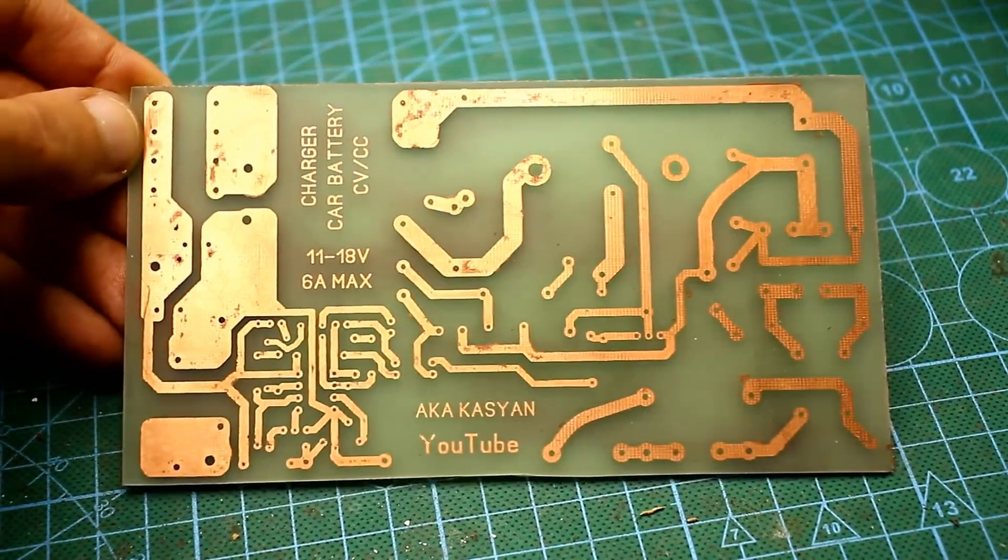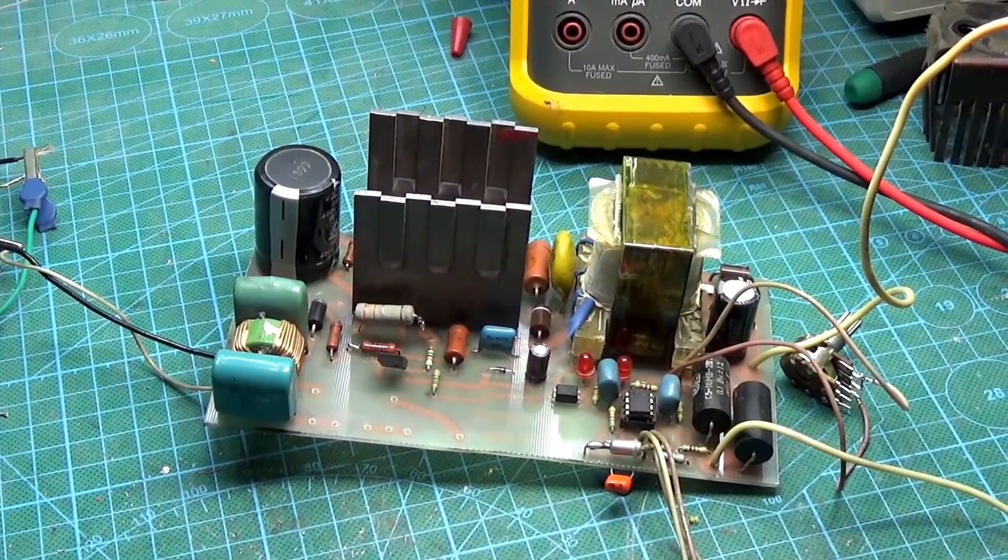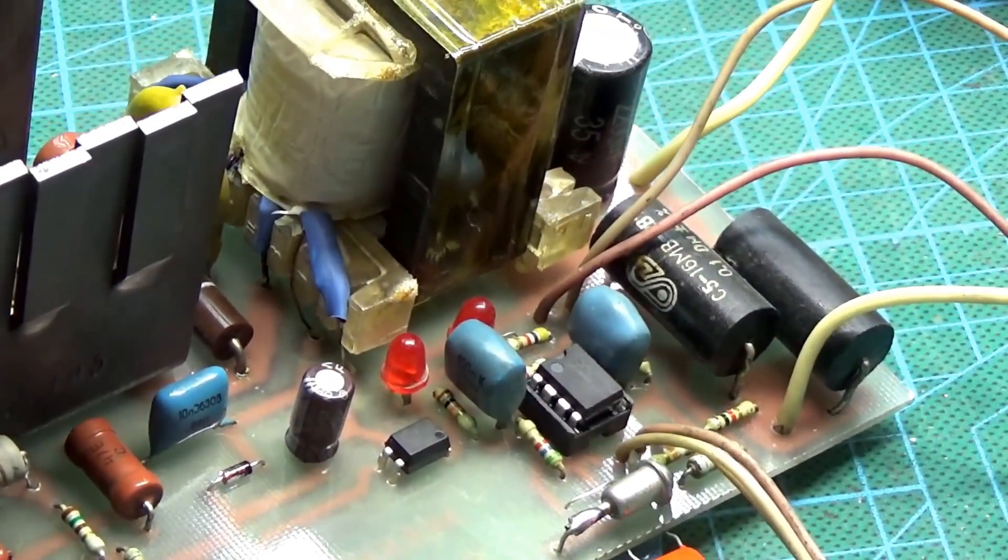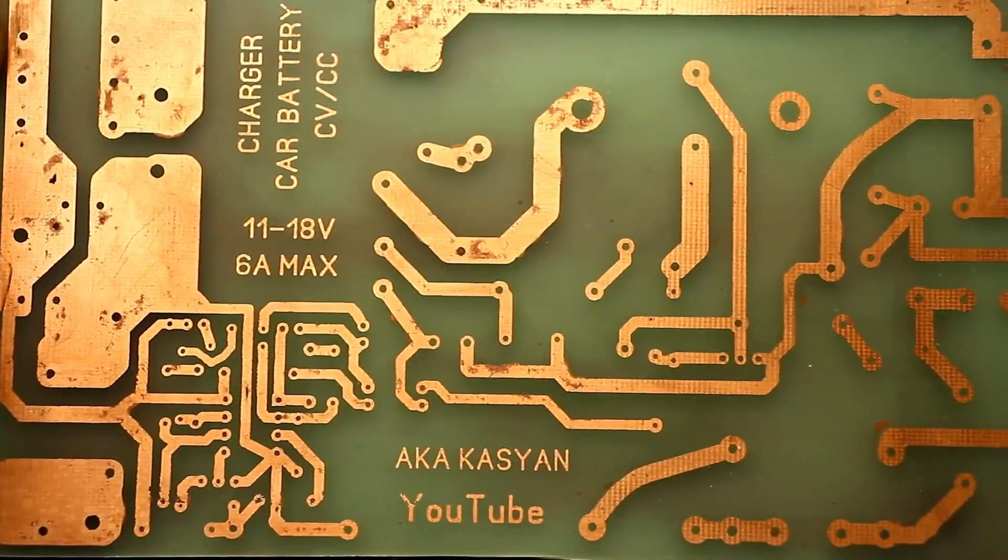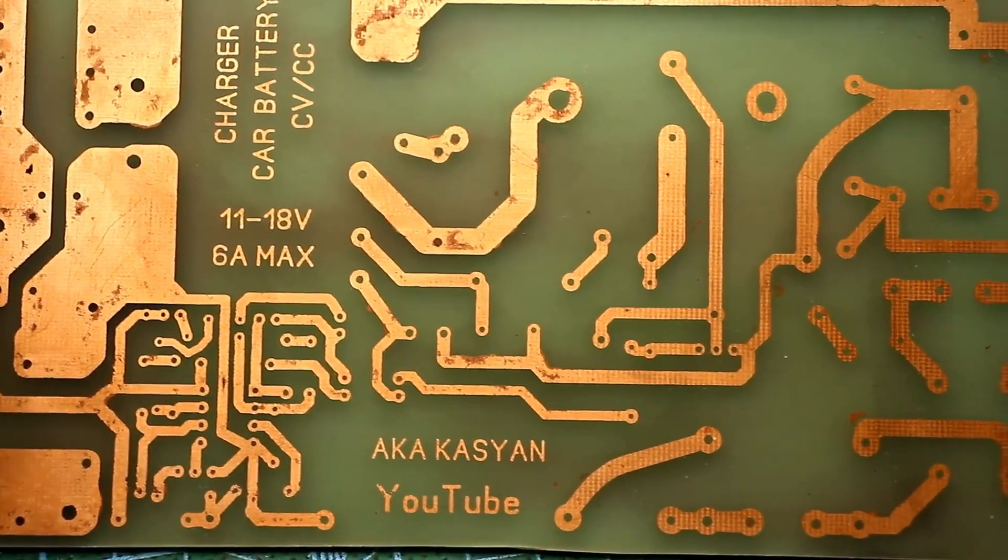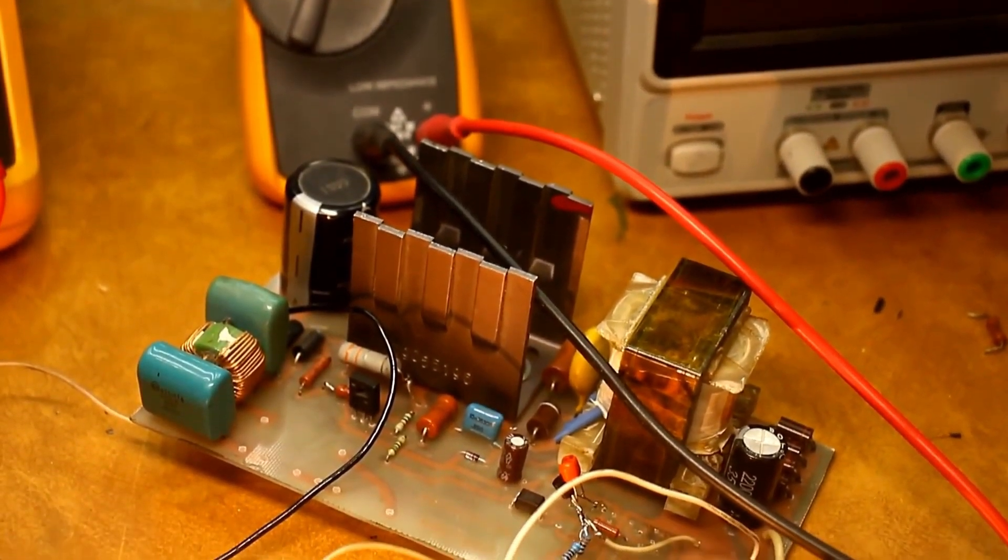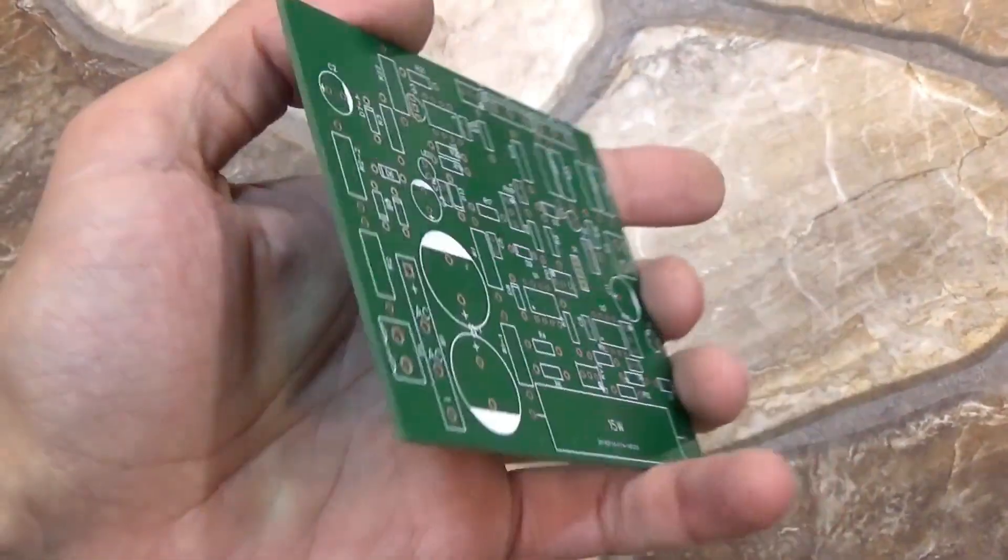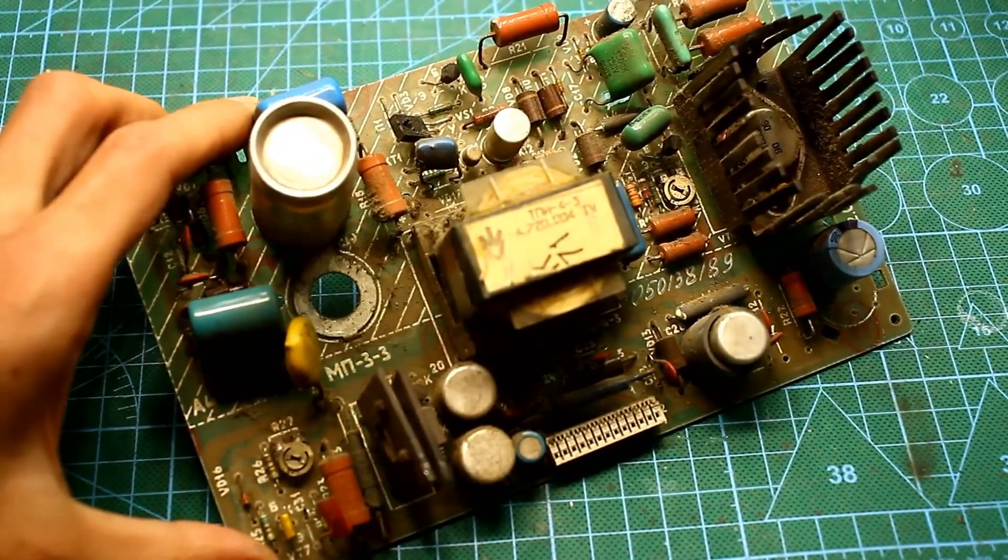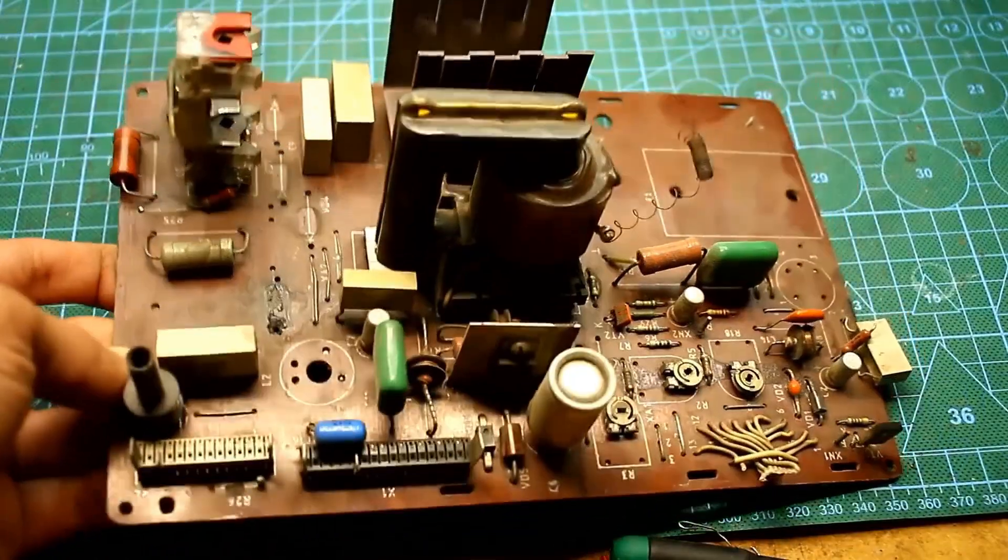The printed circuit board of our power supply is bulky for two reasons. Initially, there were more components here which were eventually removed, and the radio components themselves are large. Of course, I redesigned the board. For those who want to replicate it, there's an archive in the description where you'll find the printed circuit board in lay format for home LUT technology, as well as Gerbers for ordering nice boards from a factory. Almost all the necessary components can be found on the MP3-3 power module and on the line scan board.